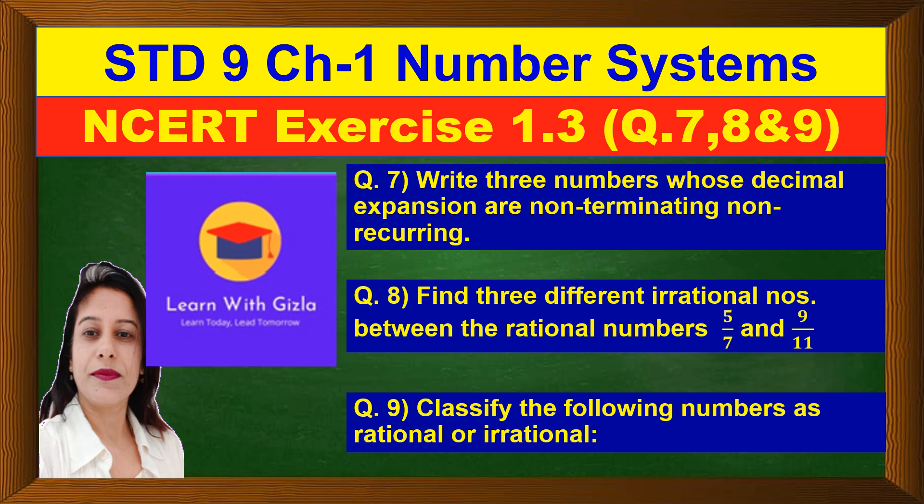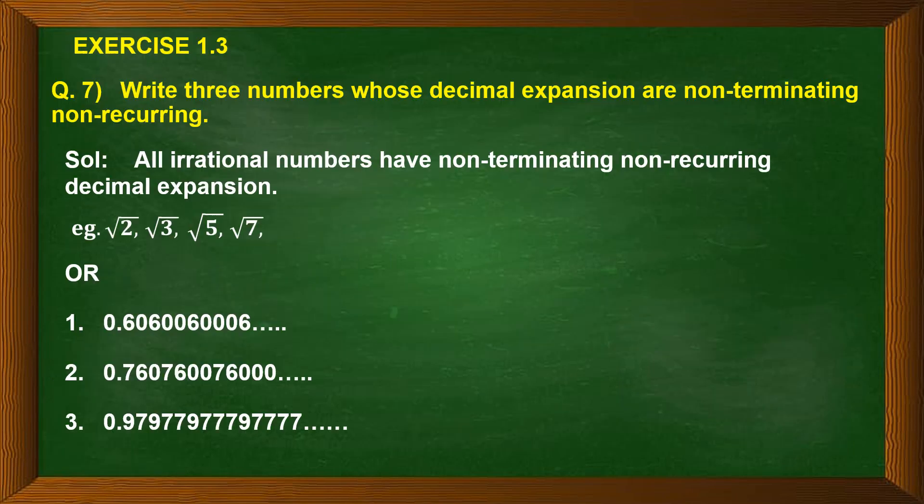Question 7 says: Write three numbers whose decimal expansion are non-terminating non-recurring. We know that all irrational numbers have non-terminating non-recurring decimal expansion. For example, root 2, root 3, root 5, root 7. Basically every prime number under a root is an irrational number.